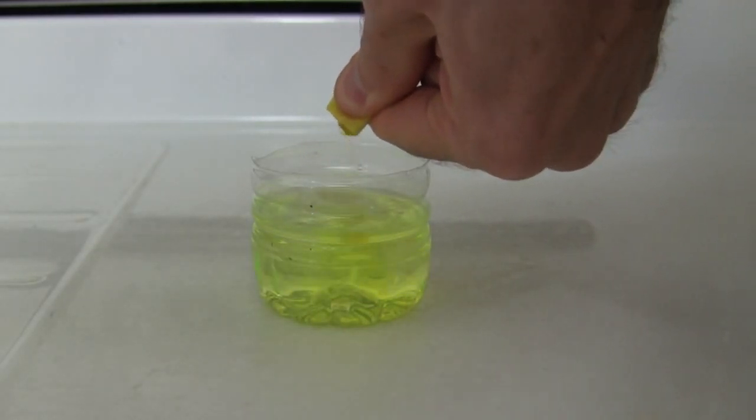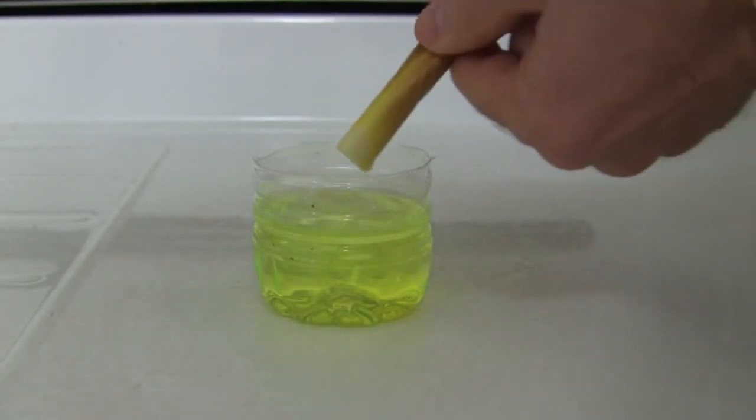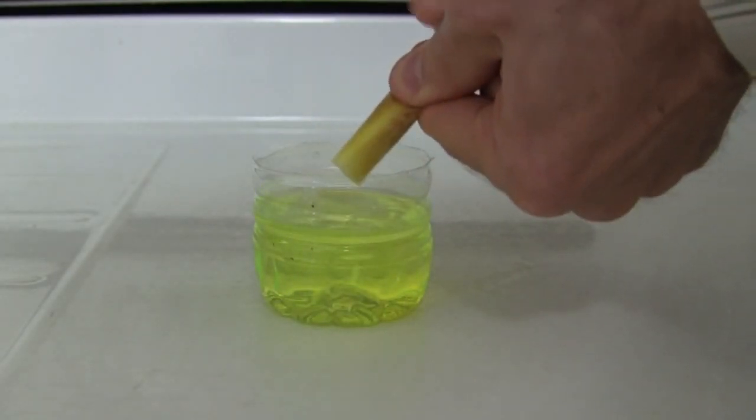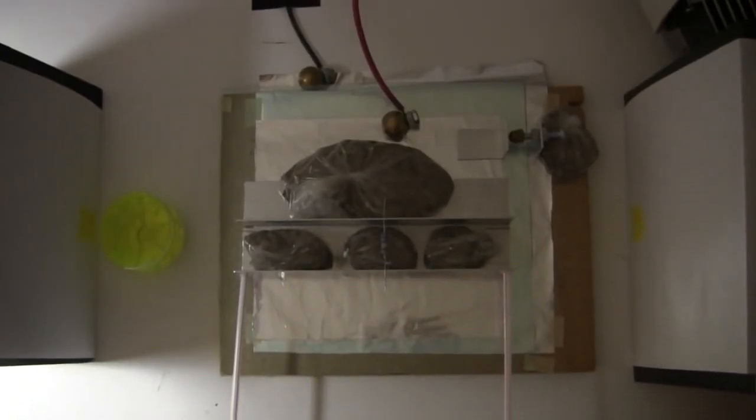I dip one end of the tube in a container of tap water, soaking the material. By wetting the material like this, and gently squeezing, I get some of the fluorescent in the water. I then put it in the path of the laser, and now I can see the laser beam.